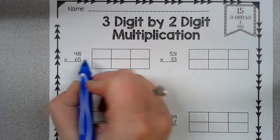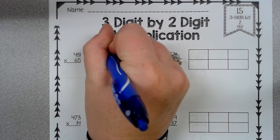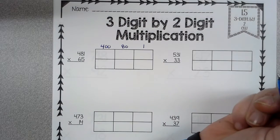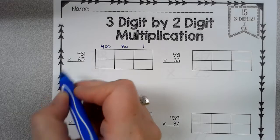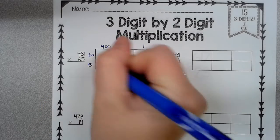So I have 481 times 65. So to break this up, I'm going to go 400 plus 80 plus 1, because that's 481, and then the 65 is 60, and then 5.